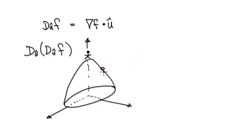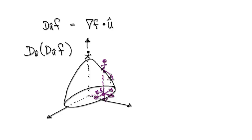But if you're not at the top — let's say you're here at a saddle point — it won't work the same way. If you head in one direction, it's going to concave down, but if you head in another direction, it's going to concave up. So the concavity is not consistently negative in this case.